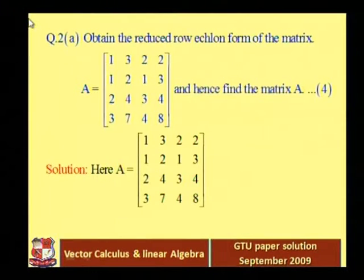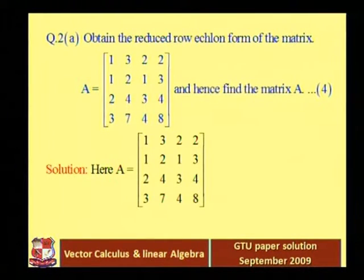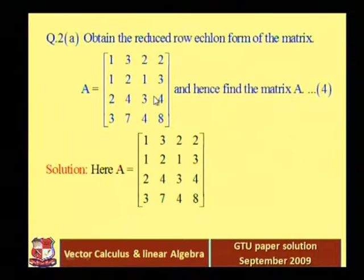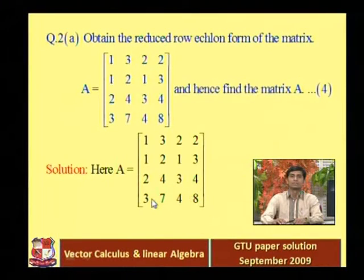Question 1 is now complete — we already covered 7 questions, each worth 2 marks. Now question 2: obtain the reduced row echelon form of the given 4×4 matrix and find the rank. The matrix A has first row 1, 3, 2, 2; second row 1, 2, 1, 3; third row 2, 4, 3, 4; fourth row 3, 7, 4, 8.